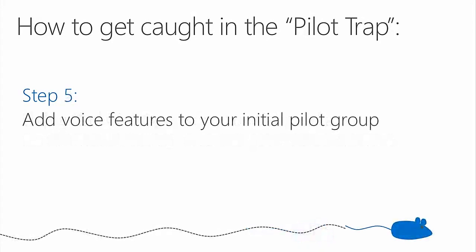Now we're going to start to turn on the voice features. I'm going to choose 25 or 50 people in my pilot group, give them this basket of parts on my uncertain network, and start to turn on the voice features. They start to experience the voice and video collaboration of Lync and they love it — it works great, no voice quality issues, maybe some small compatibility issues we had to work out with devices. So I add more users — from 25 to 50. They fall in love with it, standing around the water cooler: conferencing, collaboration, screen share, video — it's awesome. Then 50 turns to 75, then 75 turns to 100.